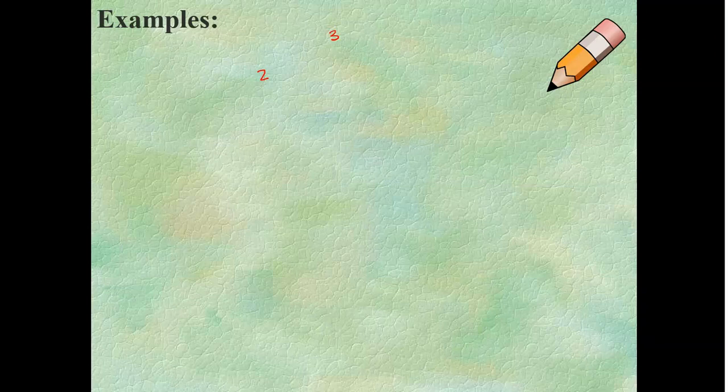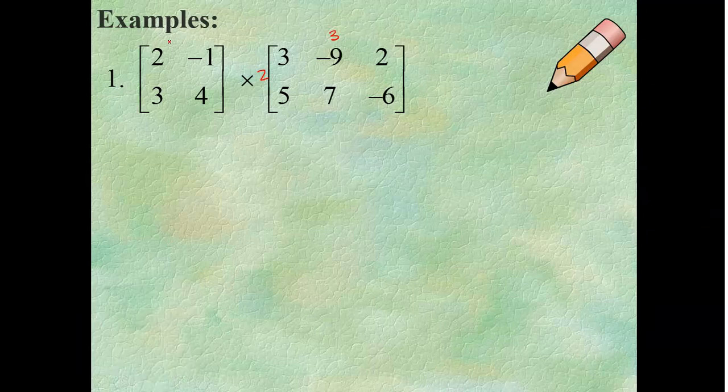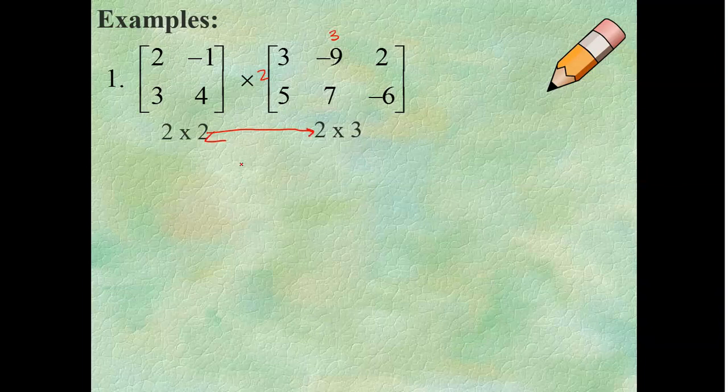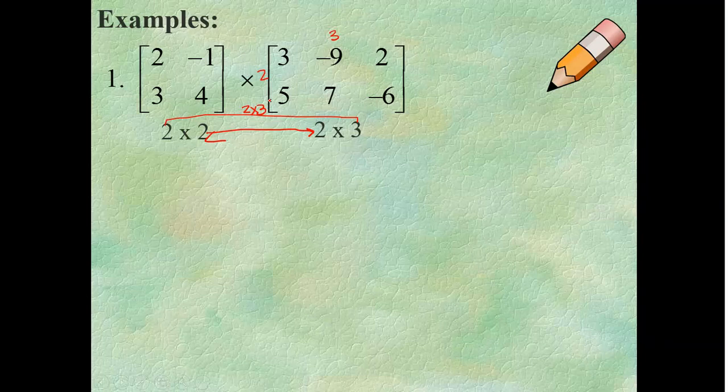Alright, so let's try the first problem here. I have a 2 by 2 matrix, it looks like, and I have a 2 by 3 matrix. So now, let's figure this out. I notice that the two insides are matching. That's good. We need them to match. And we look out here, so it looks like I'm going to get a 2 by 3 matrix from my resulting answer. So, here's my matrix.